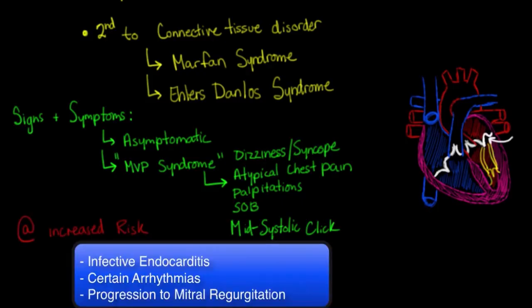One other important thing to know is that mitral valve prolapse puts you at increased risk for a couple of things. First, infective endocarditis — since this valve is not totally normal, bacteria are slightly more likely to colonize and infect it. In addition, mitral valve prolapse may predispose these people to certain arrhythmias. And as mentioned, it can actually progress to mitral regurgitation, causing further problems.